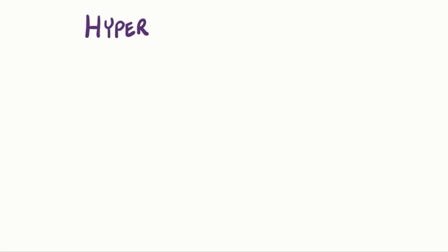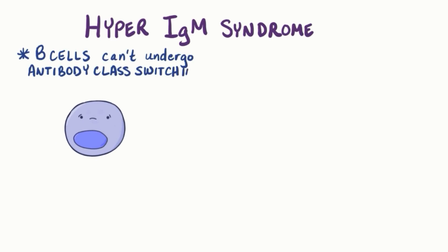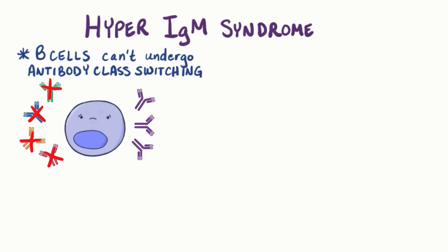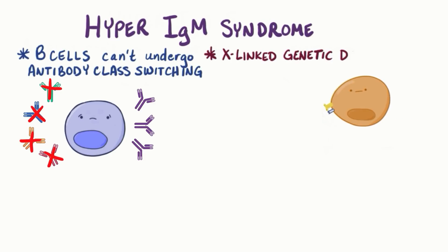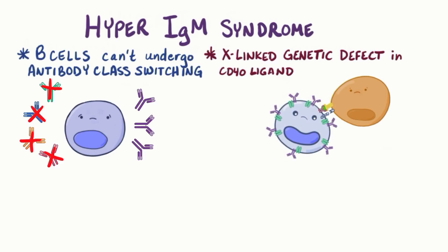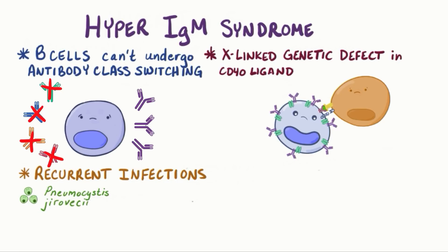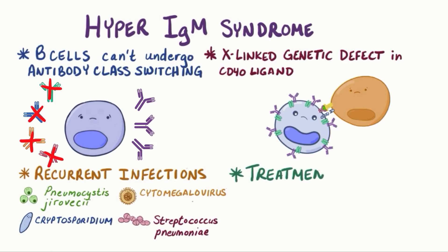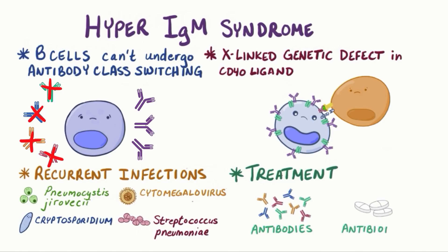As a quick recap, hyper-IgM syndrome is characterized by a defect in the ability of B cells to undergo antibody class switching, meaning that they can produce IgM antibodies, but not IgG, IgA, IgE, or IgD. The most common cause is an X-linked recessive genetic defect of the CD40 ligand, leaving helper T cells incapable of initiating antibody class switching in B cells. Affected individuals experience recurrent infections with Pneumocystis jirovecii, Cryptosporidium, cytomegalovirus, and encapsulated bacteria like Streptococcus pneumoniae, and might need infusions of antibodies produced by other people in addition to antibiotics.